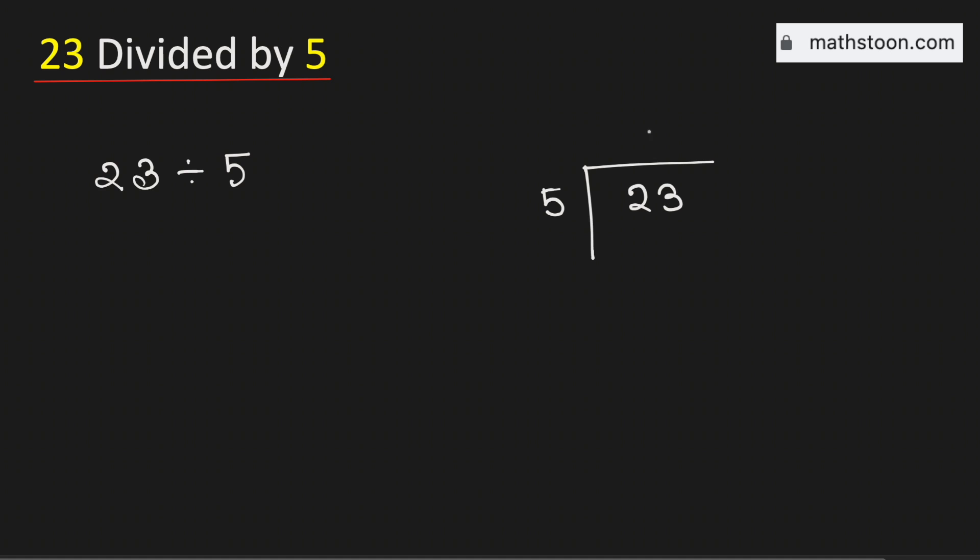We know that 5 goes into 23 by 4 times. And we know that 4 times 5 is 20.